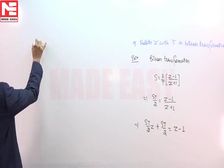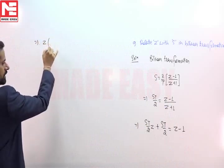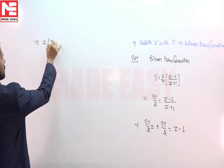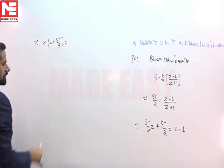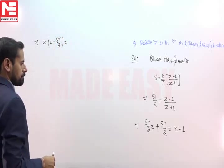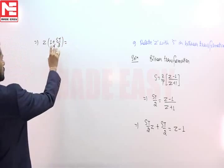Now we will collect terms of z in the LHS. So we can write z in bracket 1 plus st by 2, and in the RHS term will be z in bracket st by 2 minus 1.